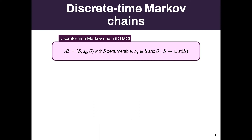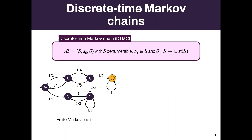Discrete time Markov chains — DTMC for short — have a denumerable state space with distributions between the states. For example, you have a finite number of states and a distribution with finite support. From S0, you can go to S1 or S3, each with probability one-half. This is a finite Markov chain.